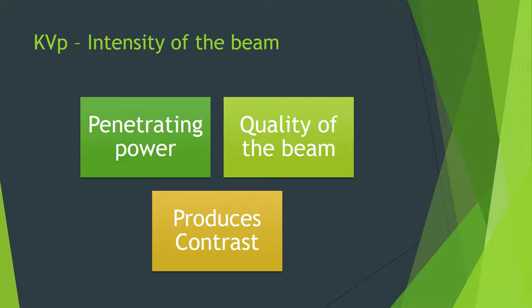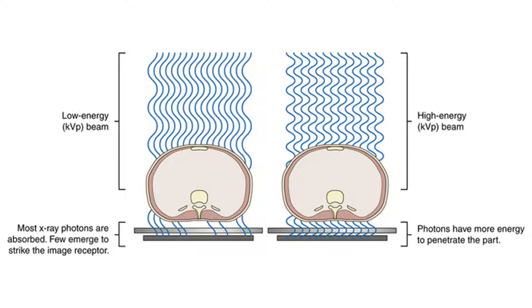Depending on what examination you're performing, you want the optimal kilovoltage potential to allow those photons to penetrate a medium. Low-energy X-rays — about 60 kV — is the lowest you'll use in diagnostics. These are far too soft and low-energy; they're filtered out using about 1.5 mm of aluminium or beryllium. They're not very energetic — they're not going to get out of that patient.